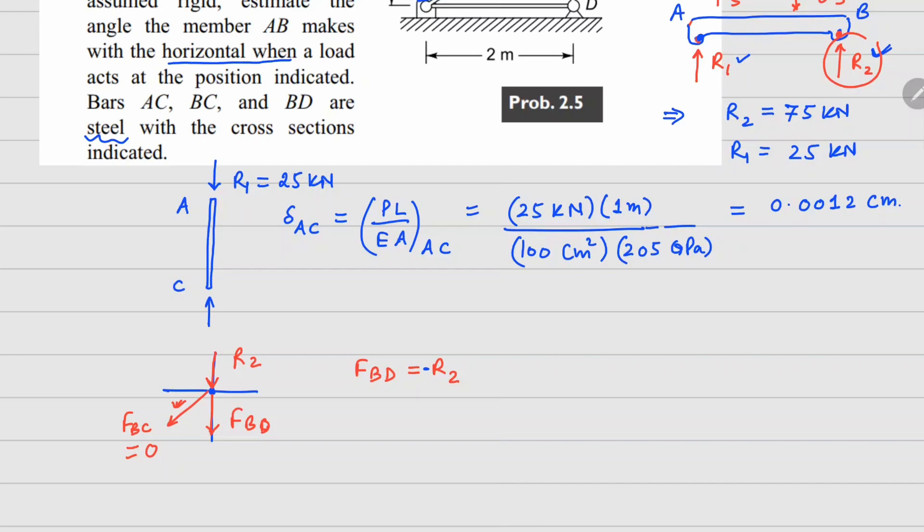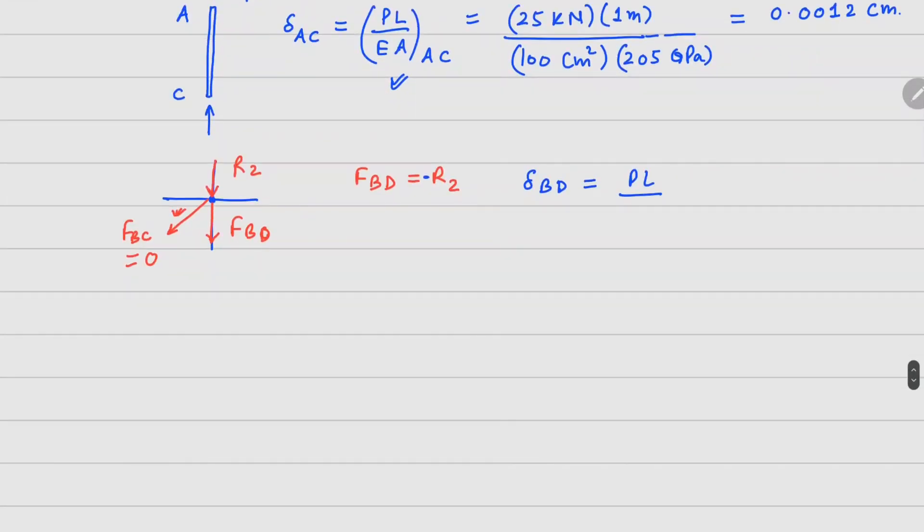Now similarly we can find out delta BD also here, so we use the same idea, PL over EA for member BD. So force in this case, because it's R2, R2 value is 75 kilonewtons.